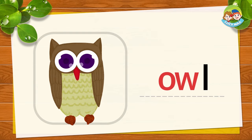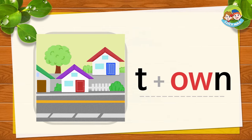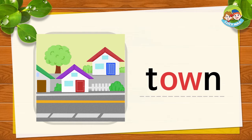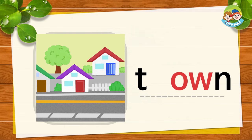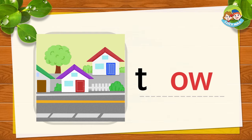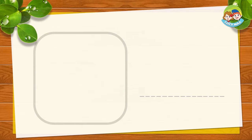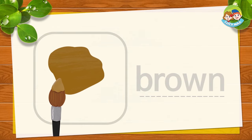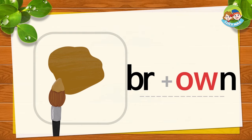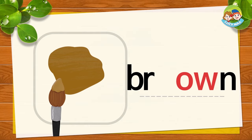Your turn. Good job. This is a town. T, OW, N together is town. T, OW, N, town. Now you try. Very good. This is the color brown. BR, OW, N together is brown. BR, OW, N, brown.